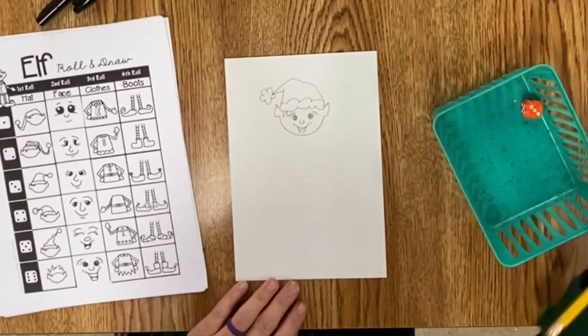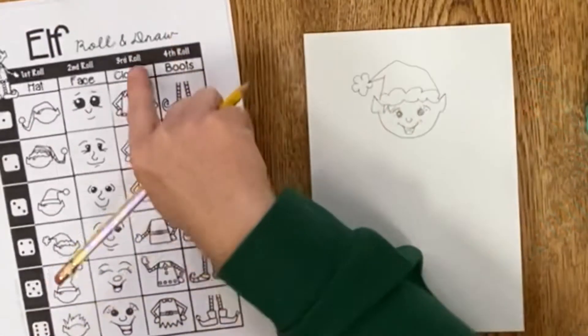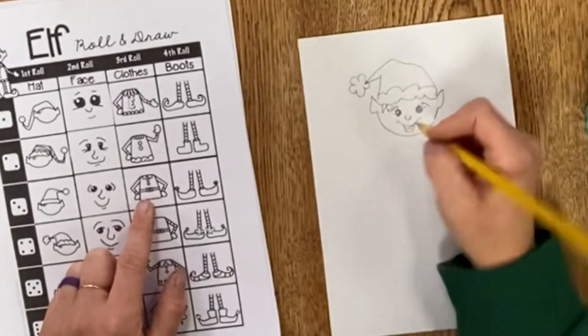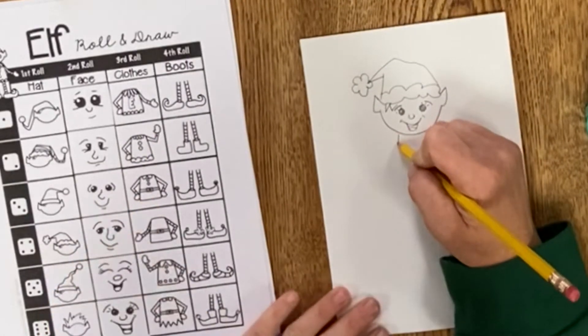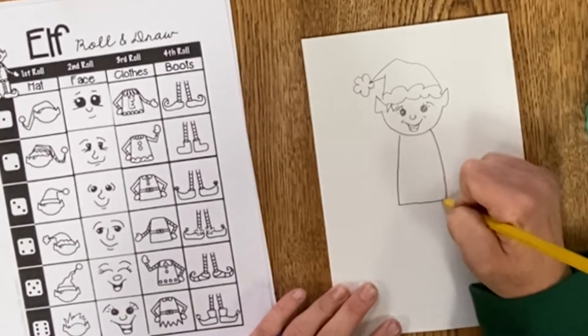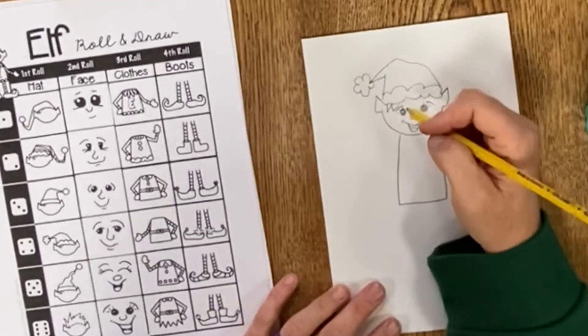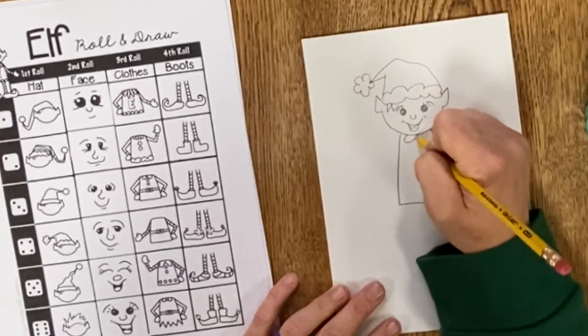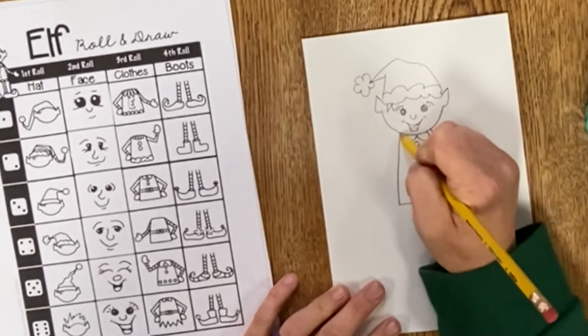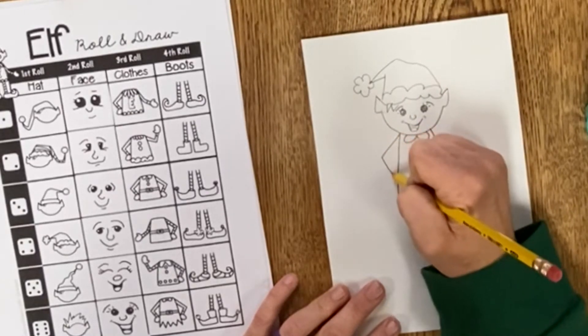Okay, on my third roll I rolled a three, so I come to third roll. I'm going to start off with the shape of the elf's shirt or tunic, and all of the elf's clothing. I'll do the collar, the buttons, and then the arms.